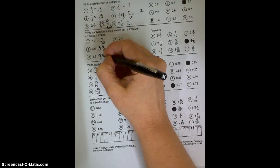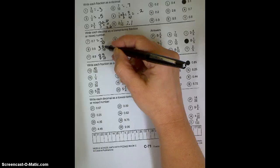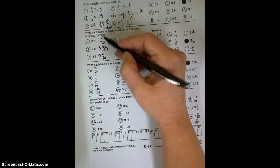And it did ask us to reduce. 5 tenths can be reduced to 1 half. So that one is actually 3 and 1 half. 7 tenths cannot be reduced, and neither can 9 tenths.